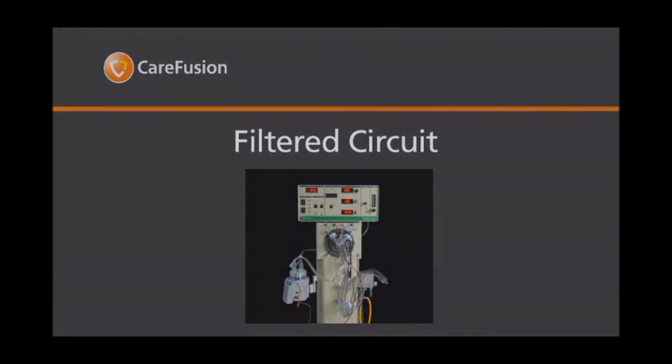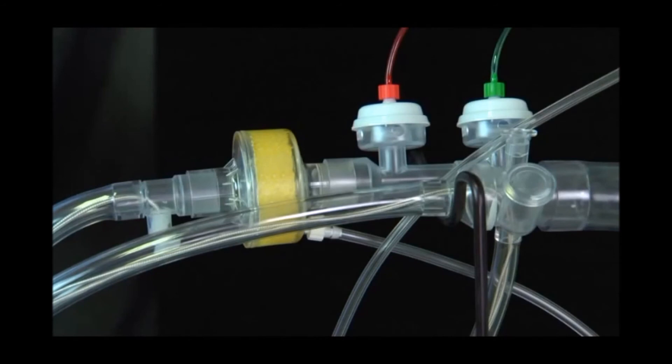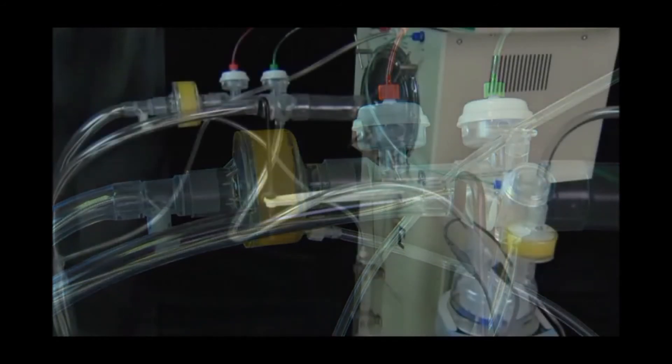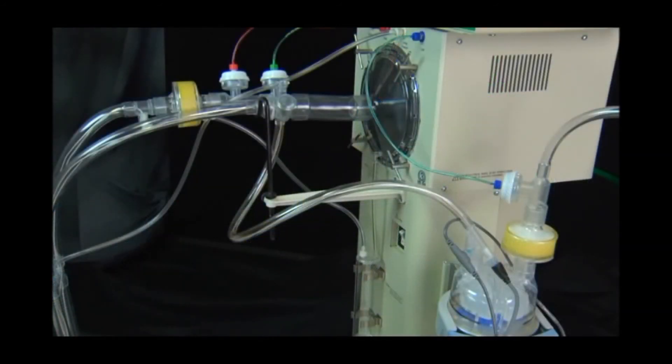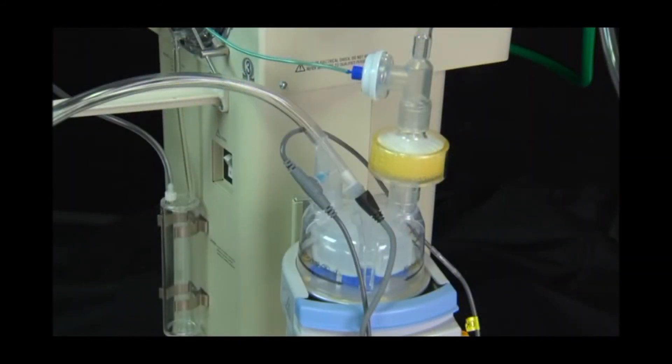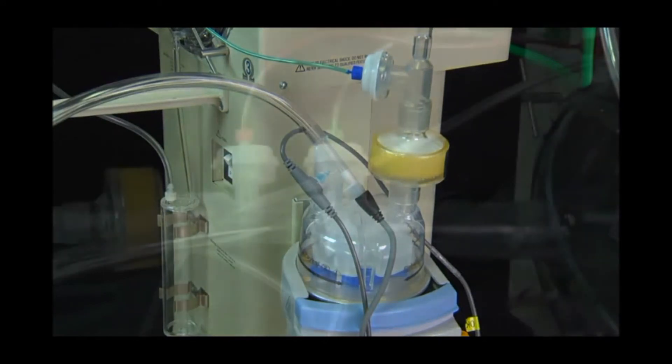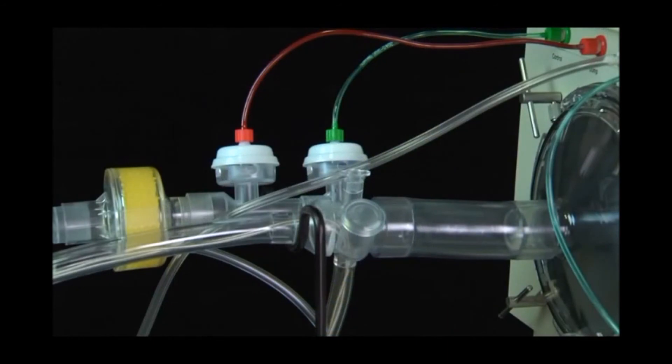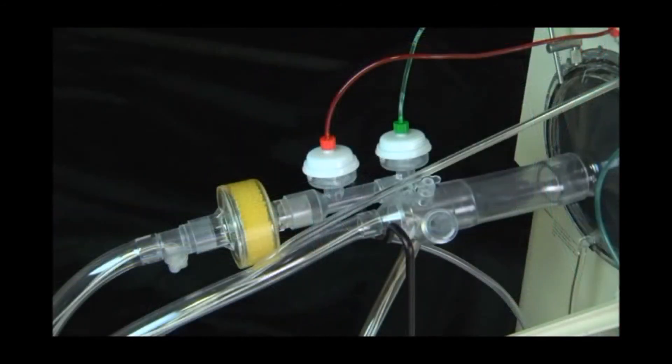The filtered circuit for the 3100 provides filtration of gas from the inspiratory and expiratory limb using a HEPA filter. The setup of the 3100 circuit is essentially the same as the non-filtered circuit. The limit valve is placed on the dry side of the humidifier chamber. This ensures the filter stays dry so it does not have to be changed. The dump valve has been moved next to the control valve behind the expiratory filter. Special connecting tubing for filtered circuits is provided to account for these new valve positions.